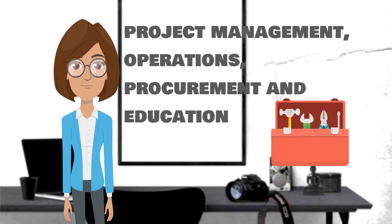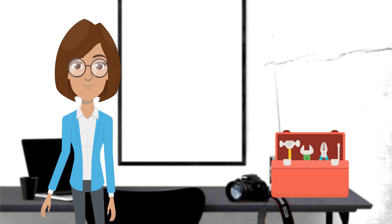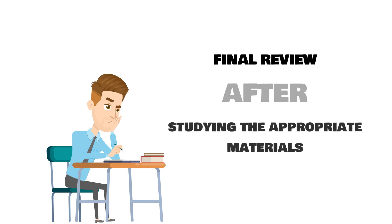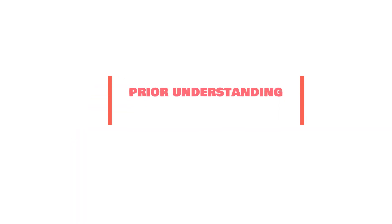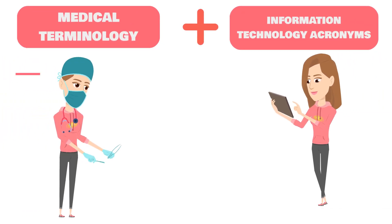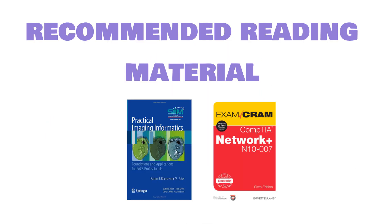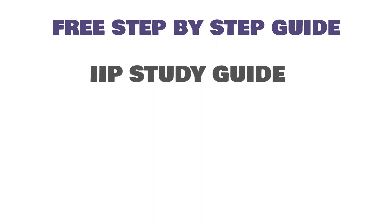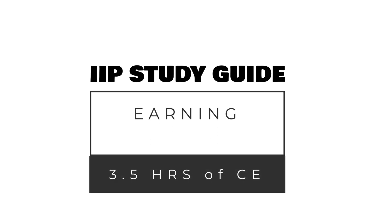This can be a helpful tool for analysts looking to progress to management in their career. For those seeking CIIP certification, to obtain the most value out of this course, please use this study guide as a final review after studying the appropriate materials. The reader must have prior understanding of medical terminology and IT acronyms to successfully grasp all subjects discussed. We urge that you study the recommended material from the free Step-by-Step Guide, and use this CIIP study guide as a review of the topics that will be covered on the exam while earning 3.5 hours of approved Category A CEs.